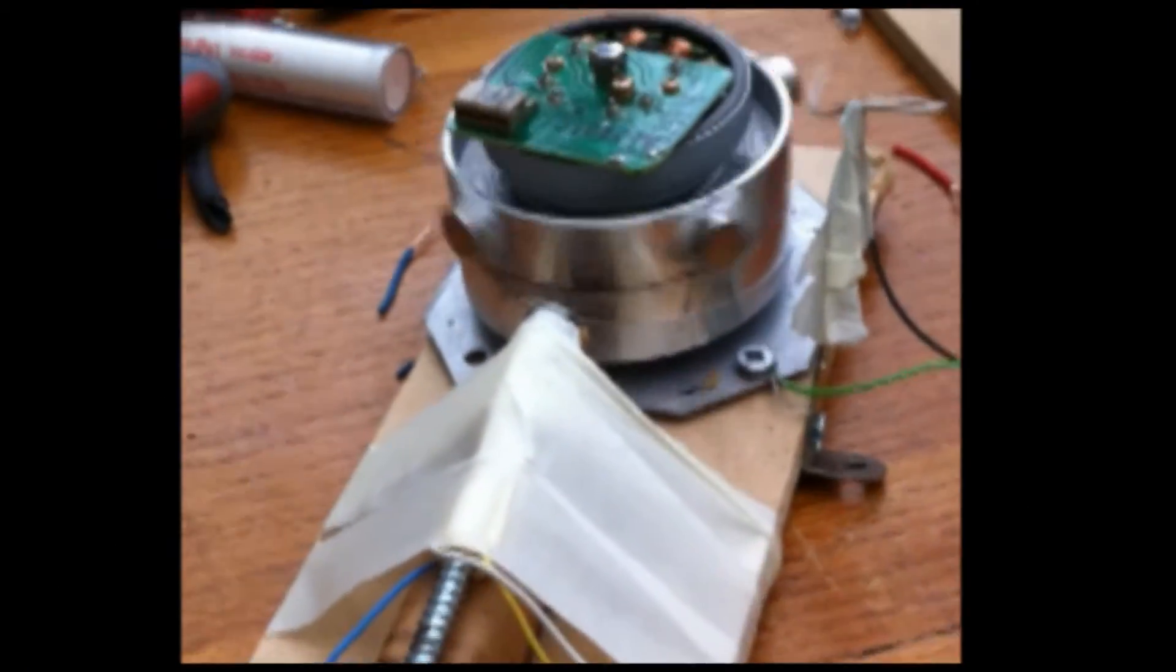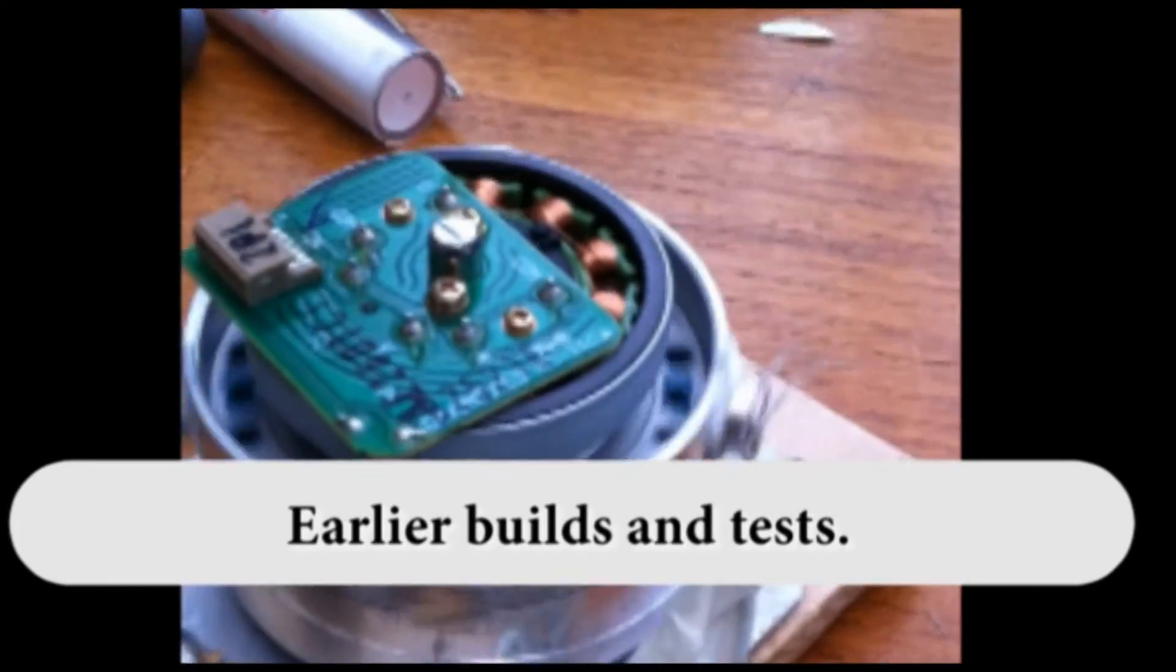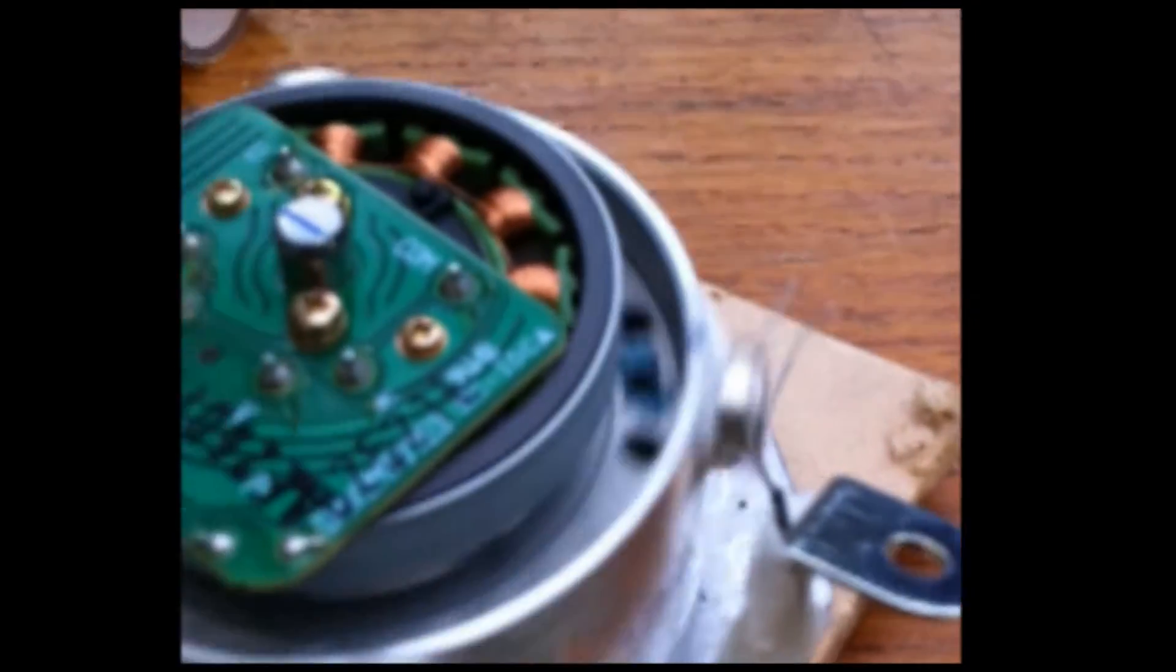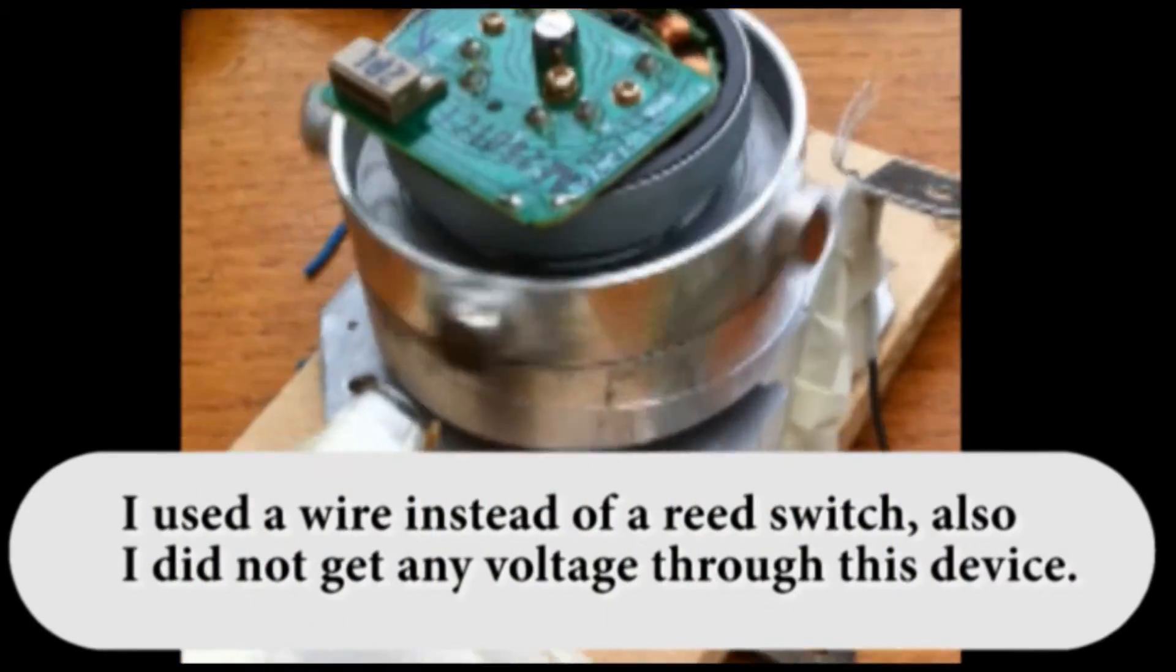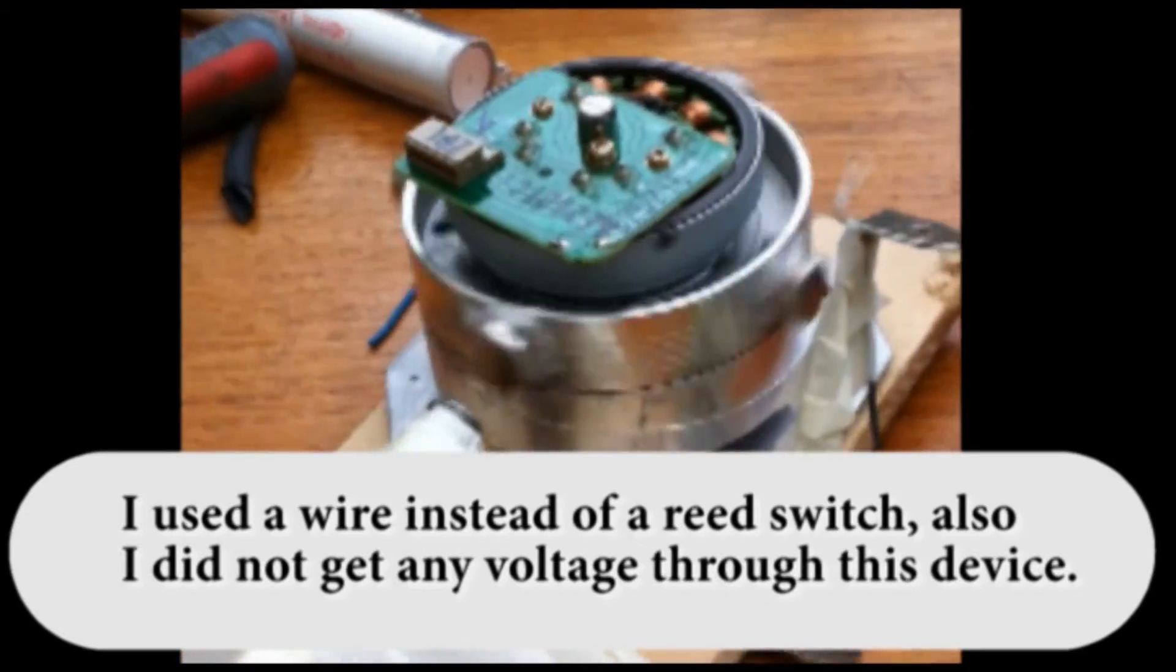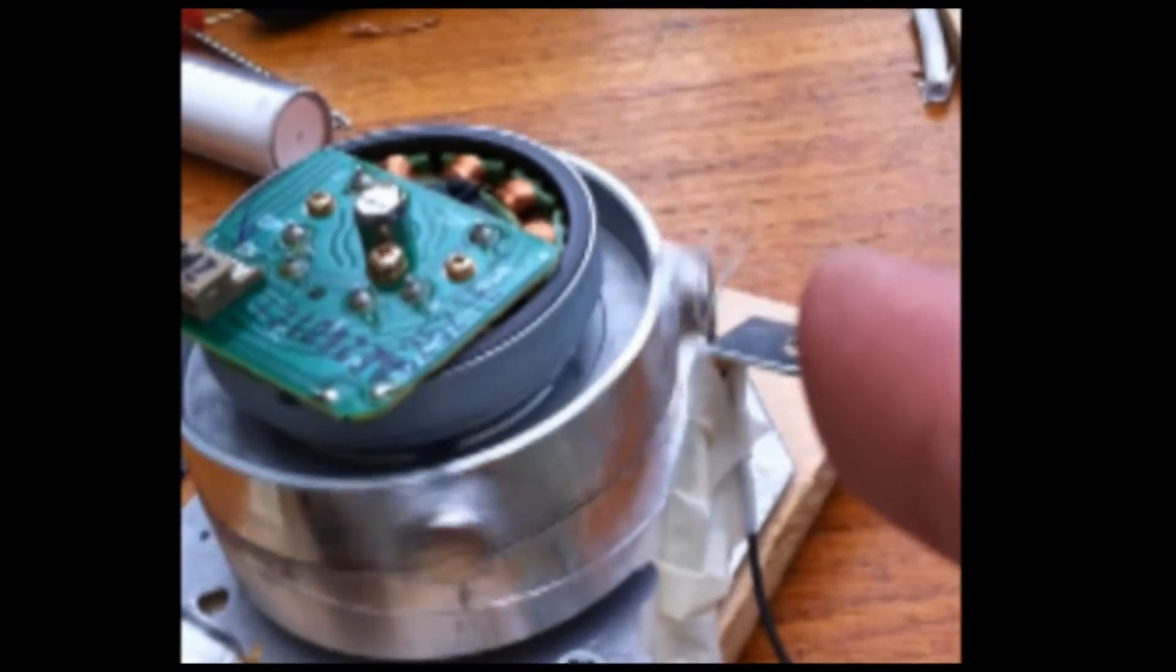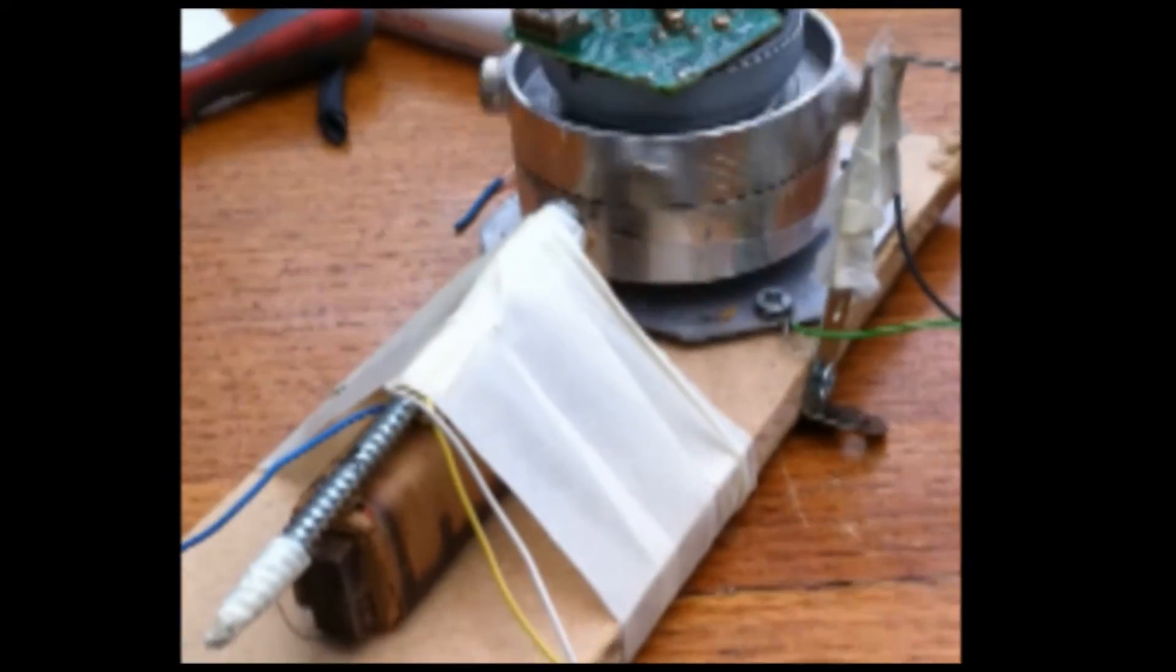My reed switch motor. I've replaced the reed switch with this contraption there. As you can see it's working. I'm going to test the voltage from there in a minute. See if I get anything. It's not going very fast. But adjustment here on this thing can make it go faster. There you go.